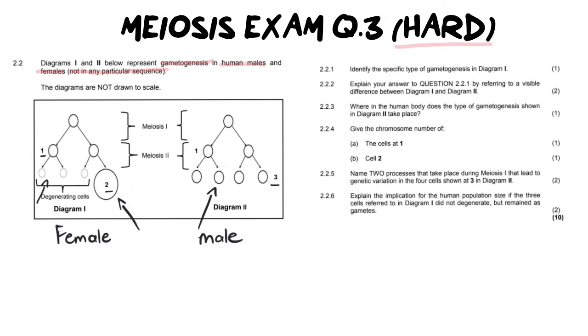Let's go to the questions now. It says identify the specific type of gametogenesis in diagram one and this is why you would have needed to identify that that was a female because now the answer you need to give is of course oogenesis.